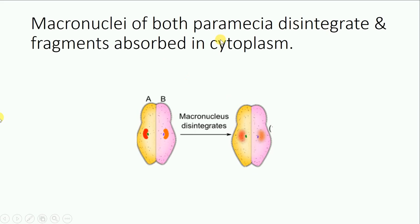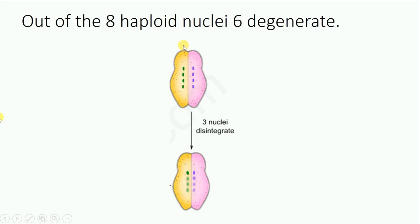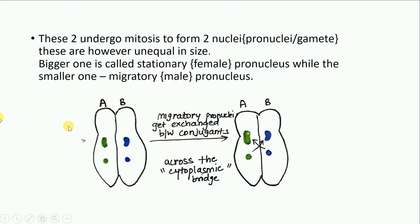The macronucleus of both conjugants disintegrates and its fragments are absorbed within the cytoplasm. The micronucleus undergoes meiosis — a diploid micronucleus will form four haploid nuclei. Out of the four haploid nuclei in each conjugant, three disintegrate, so we are left with one haploid nucleus in each conjugant. This haploid nucleus undergoes mitosis to form two nuclei, also known as pronuclei or gamete nuclei, which are unequal in size. The bigger one is called the stationary or female pronucleus, and the smaller one is called the migratory or male pronucleus.